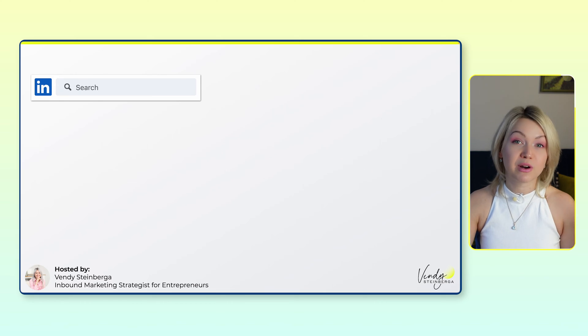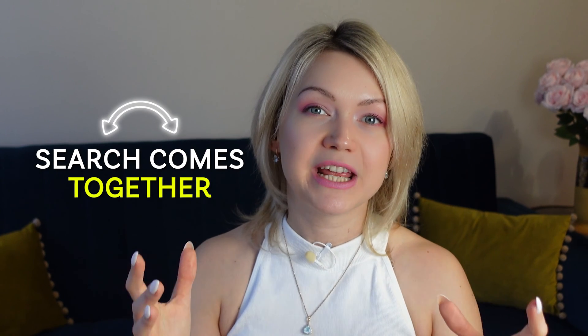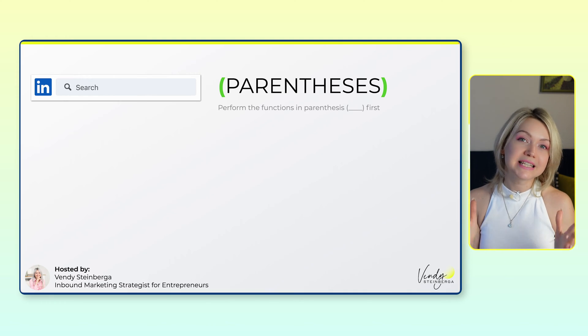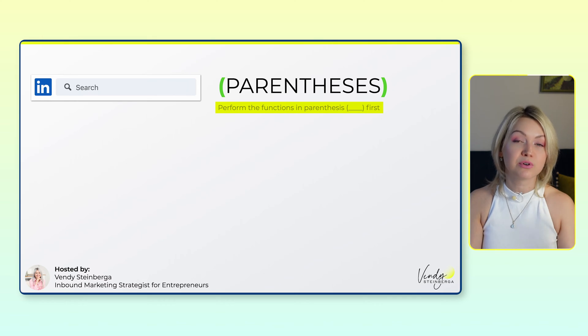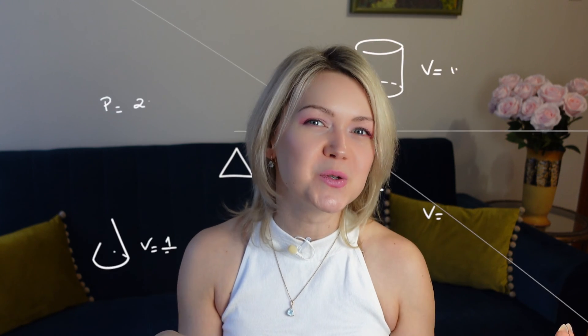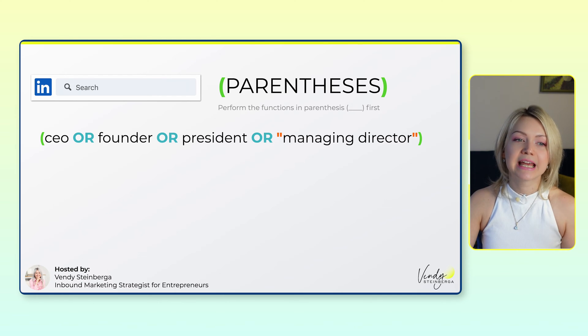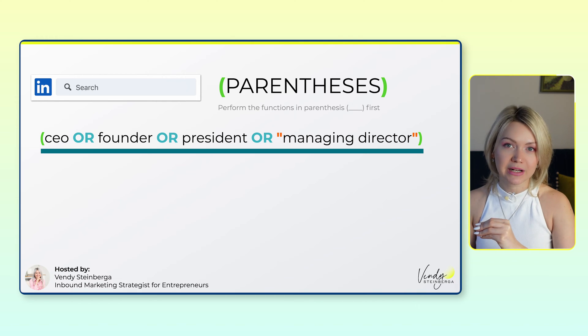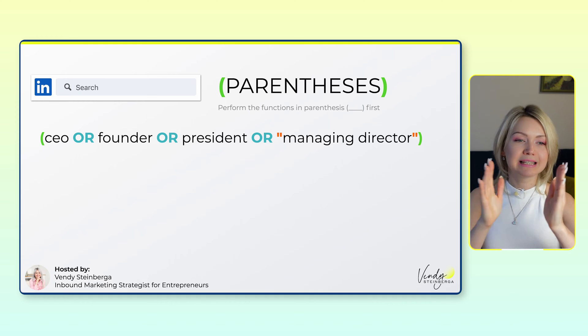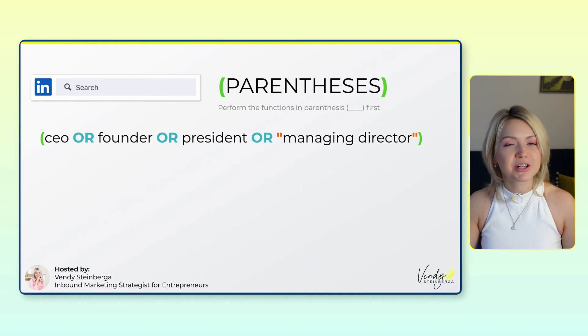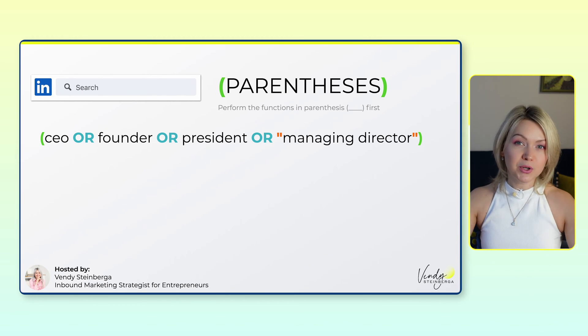And then we have the last operator, which is parentheses. This is how the search comes together — you get to use parentheses to get very specific with crafting a detailed search to get the right people in the results. When you're thinking about parentheses, you're basically telling LinkedIn you want to perform these functions in parentheses first — kind of similar to when we were doing math problems in school. So let's say I'm looking to find business owners. What I would do is say: (CEO OR founder OR president OR "managing director") — putting this in parentheses because these are different ways of describing the same type of person on LinkedIn.